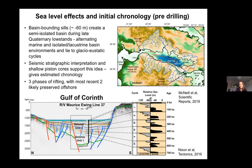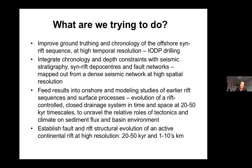Many researchers have been able to tie these glacioeustatic cycles to come up with an estimated chronology, but we don't have anything constraining that beyond a few tens of thousands of years until the drilling. We know there are three main phases of rifting, with the most recent two likely preserved offshore. You can see the location of the rift and the three drill sites at the top right. The main sill areas to the west are controlling the marine-lacustrine fluctuation, and a seismic profile at the bottom shows the most recent rift phase with alternating seismic characteristics correlated to a probable marine-lake signal.